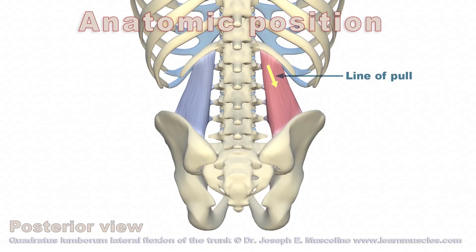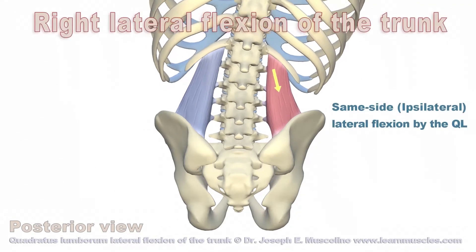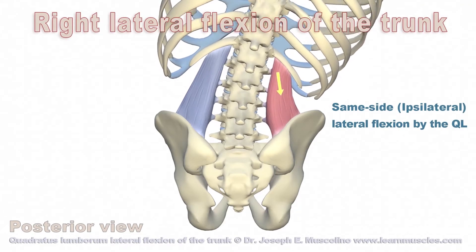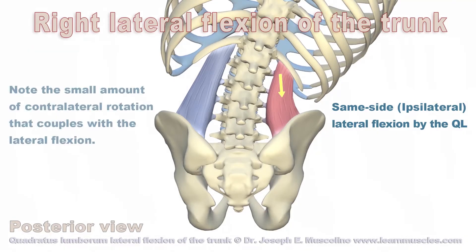The yellow arrow represents the line of pull of the right QL upon the trunk. When the right QL contracts, it creates right lateral flexion of the trunk — in other words, same-side lateral flexion. Note the small amount of contralateral rotation that couples with the lateral flexion.